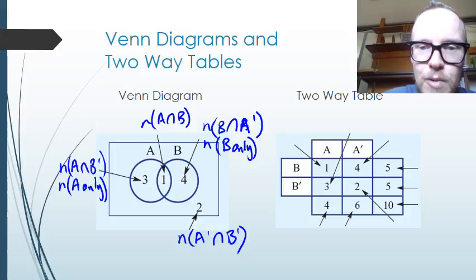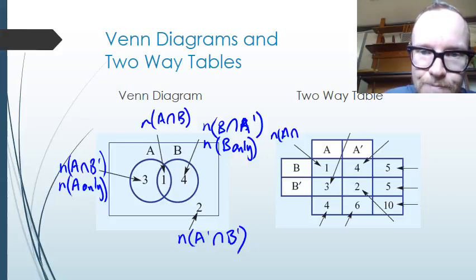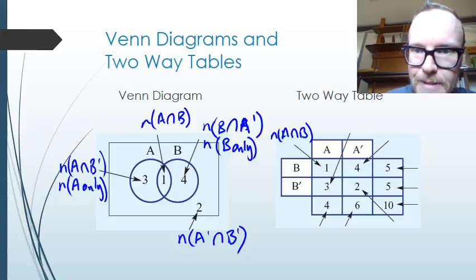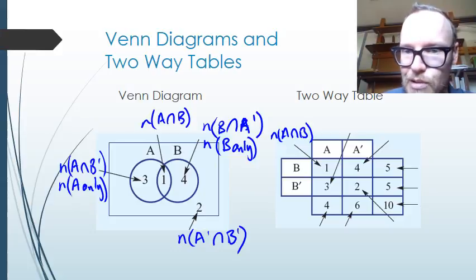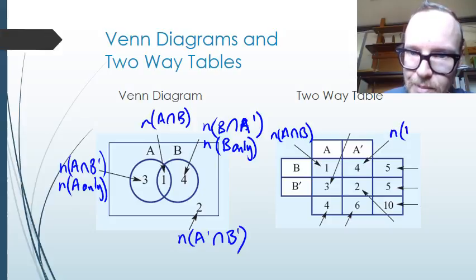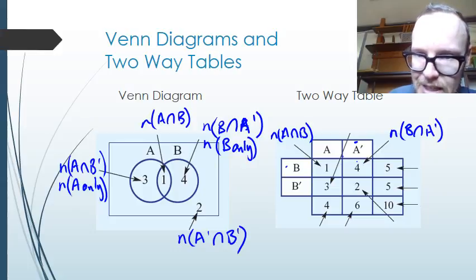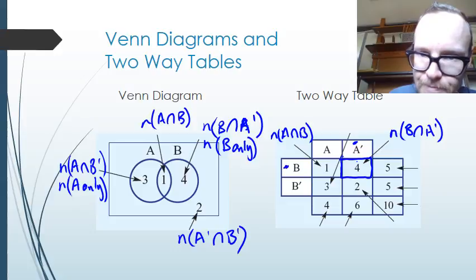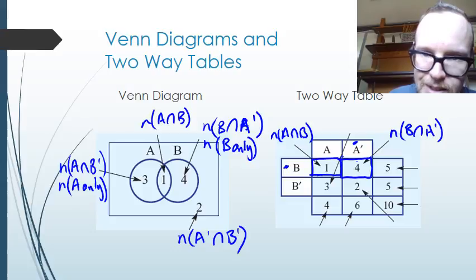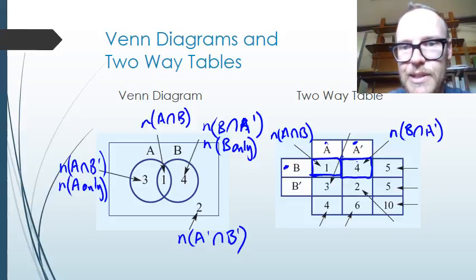We can see these values represented on our two-way table as well. The value 1 is the number of elements that are in A and B — the A intersection B. Moving along to the next one in that row, that's the number of elements that are in B and not in A. We can see that value 4 is in the column for not-A, so that's the intersection of not-A and B. And value 1 here is the intersection of A and B.